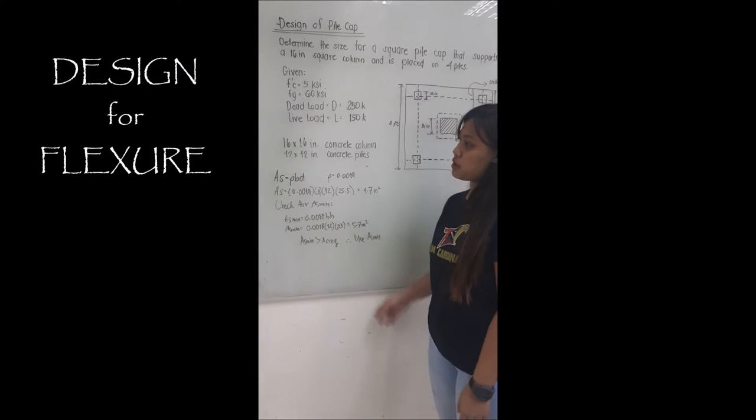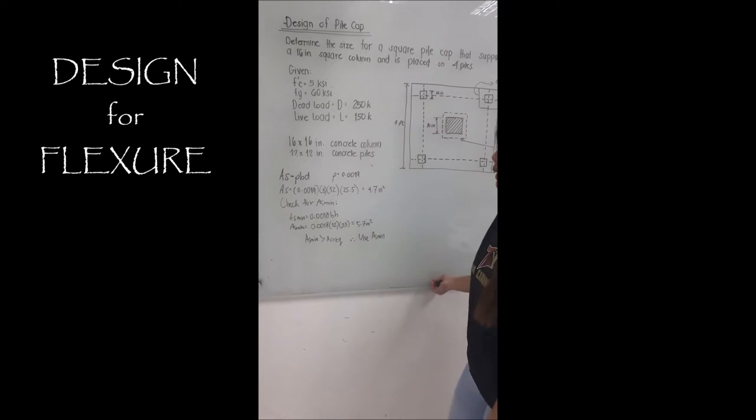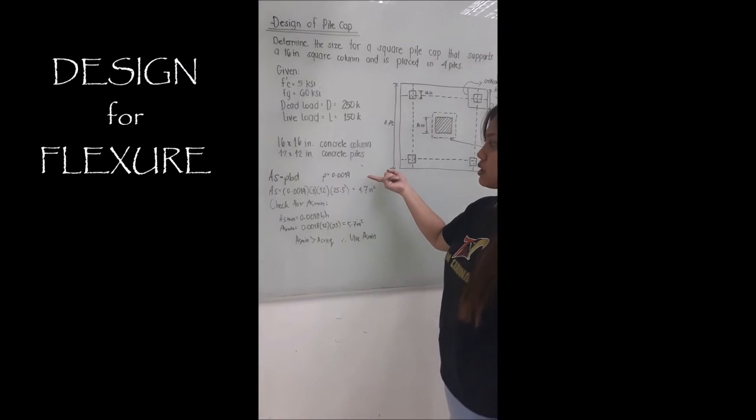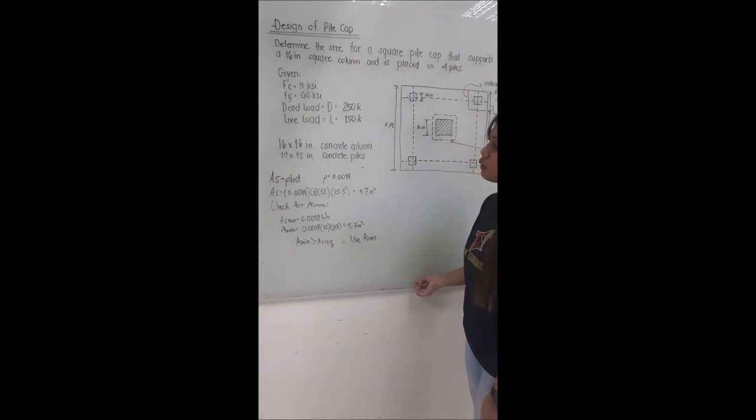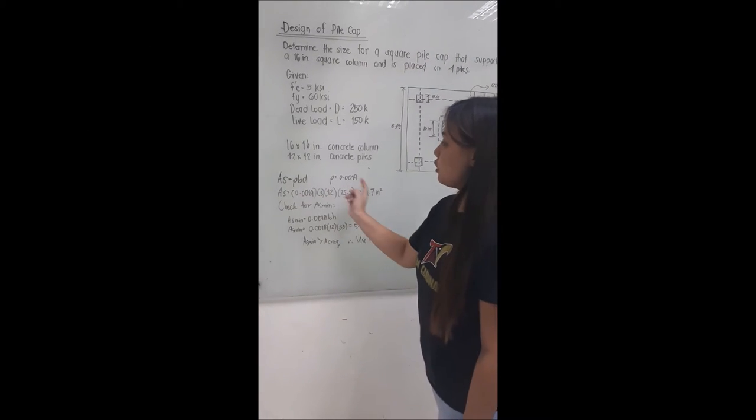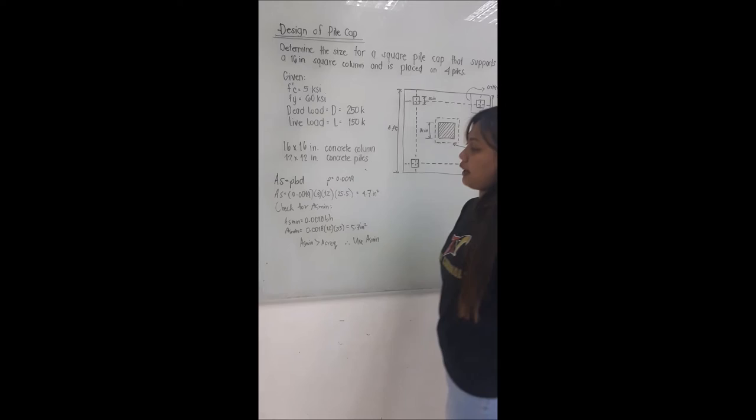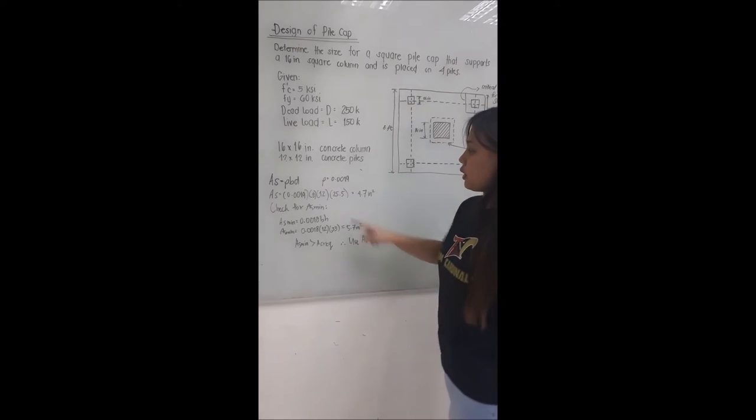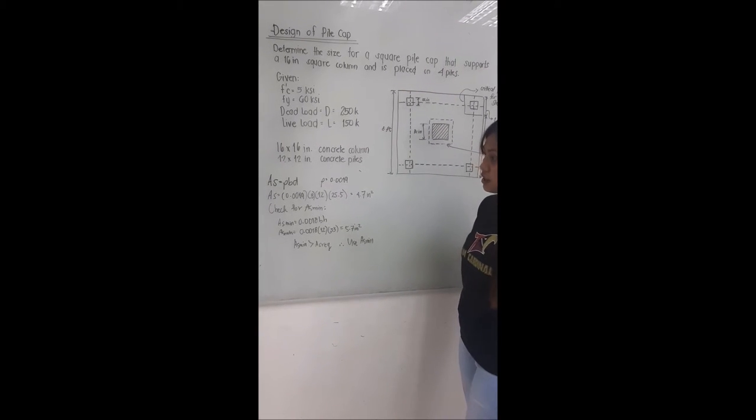For getting the area, we use the formula AS is equal to rho times b times d, given that rho is 0.0019. If we substitute the values, 0.0019 times 8 times 12 times 25.5, we get 4.78 square inches.